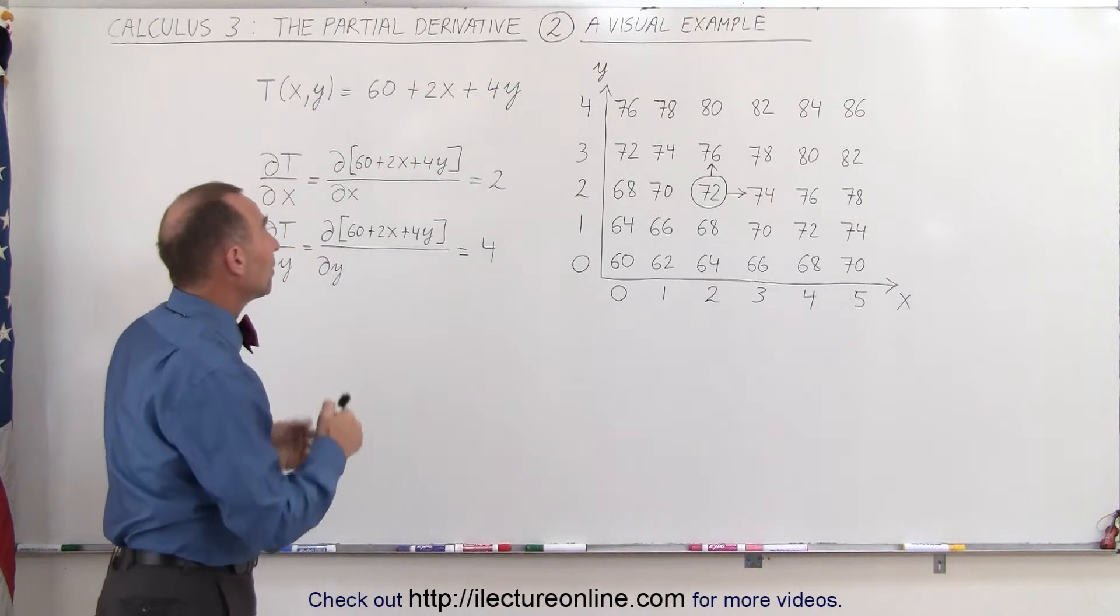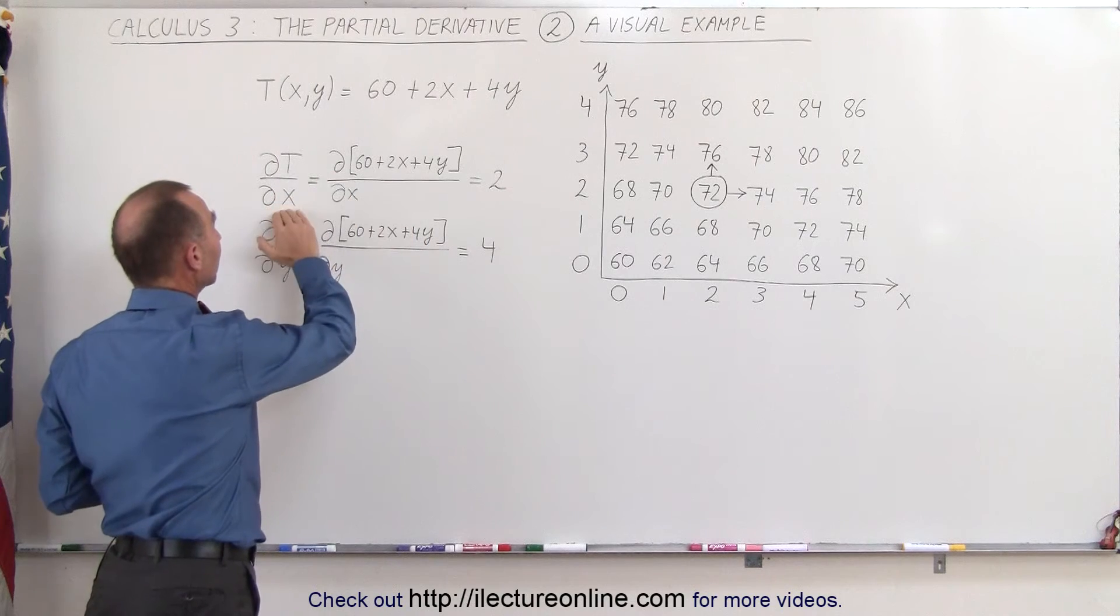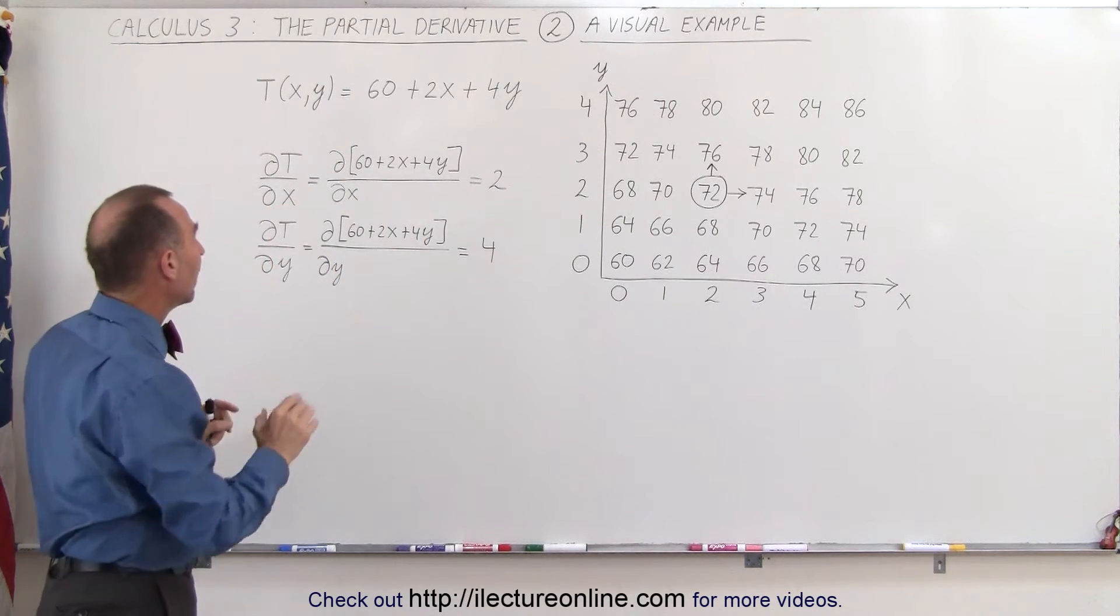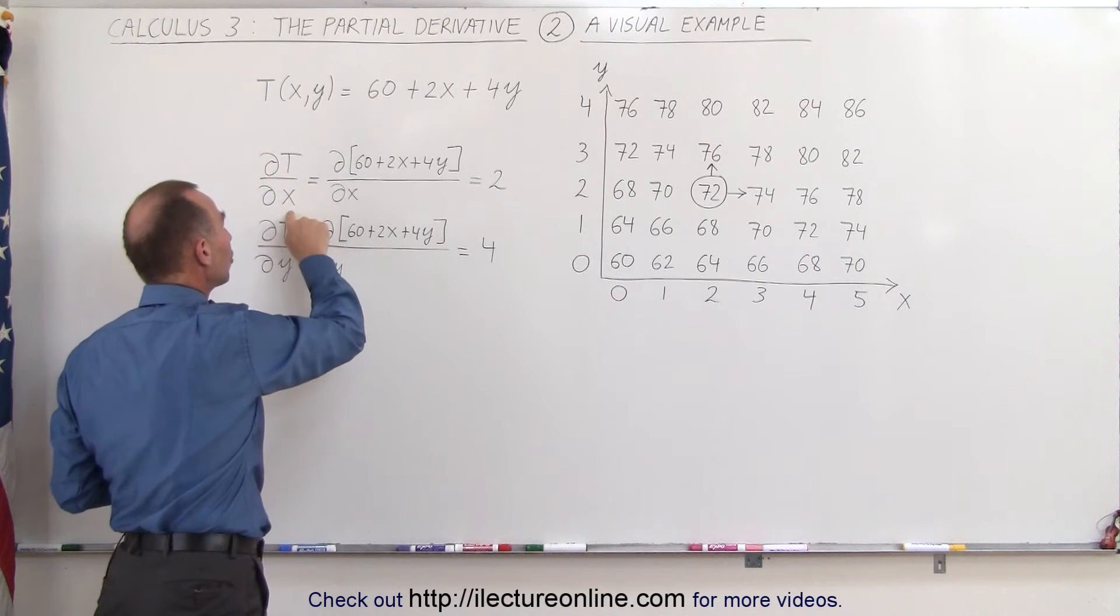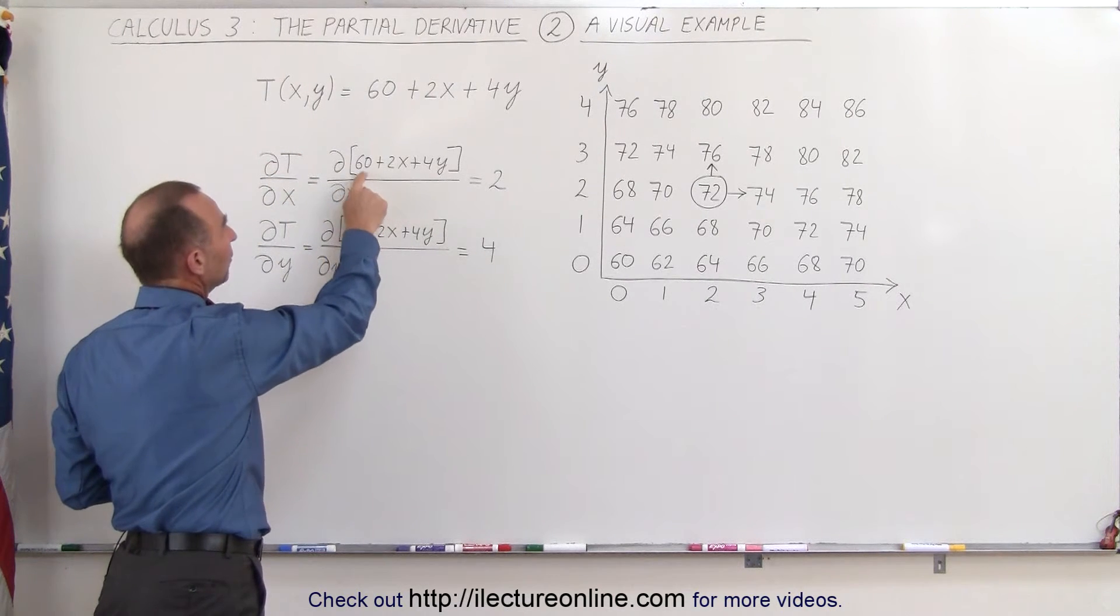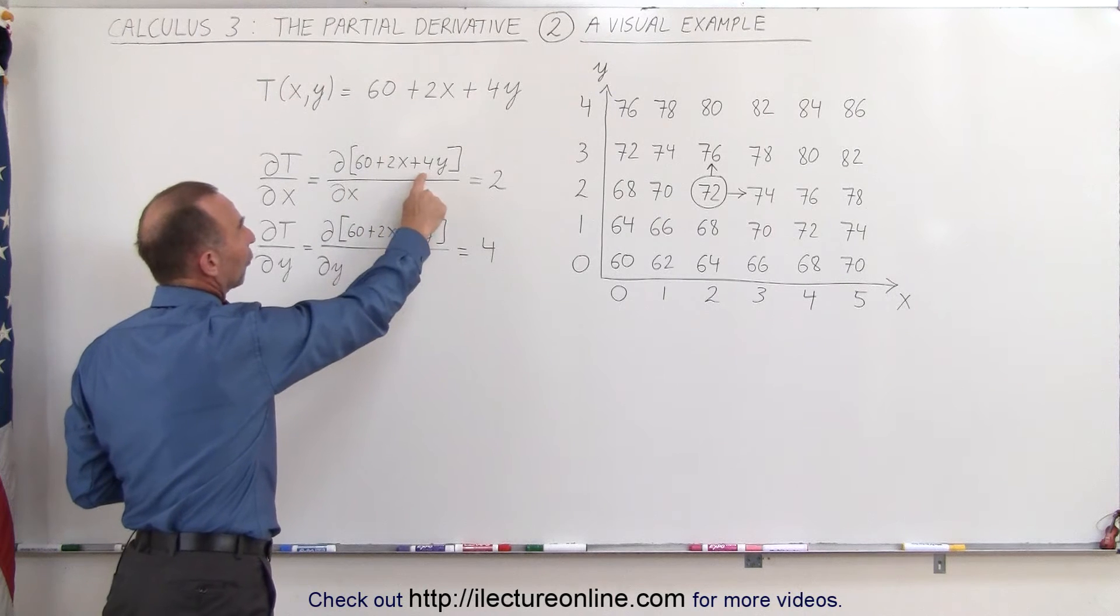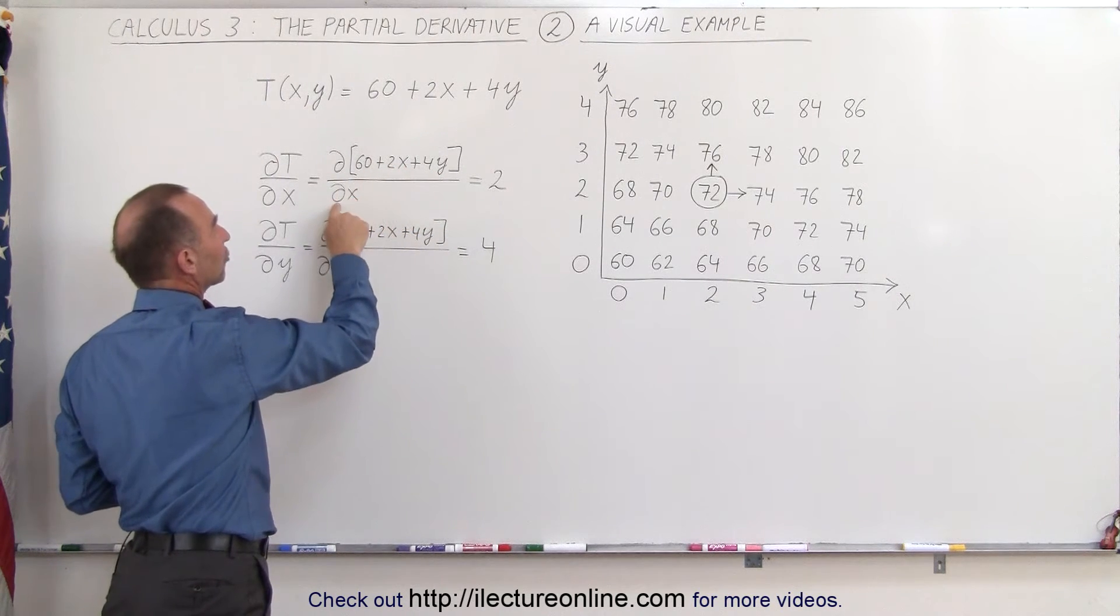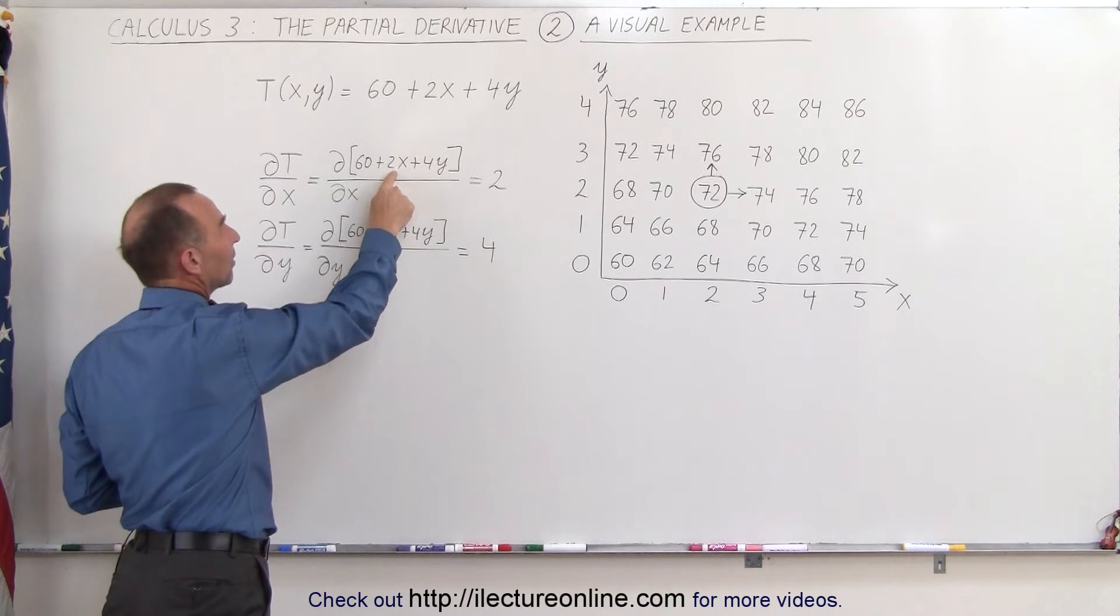Now if we take the partial derivative of that function with respect to x, that means we're going to keep y constant, y doesn't change at all, and we want to see how the temperature changes when x changes. When we take the partial derivative, the 60 is a constant, the 4y is a constant, and only this here becomes the variable. We take the partial derivative with respect to x of 2x, and we get 2.